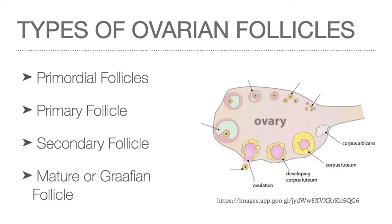There are four types of ovarian follicles. The least developed are the primordial follicles. As the female approaches puberty, some primordial follicles undergo further development to become primary follicles. In each menstrual cycle, several primary follicles enter a phase of rapid growth and become secondary follicles. Prior to ovulation, one secondary follicle develops to become the mature or Graafian follicle, which ruptures to release the secondary oocyte.